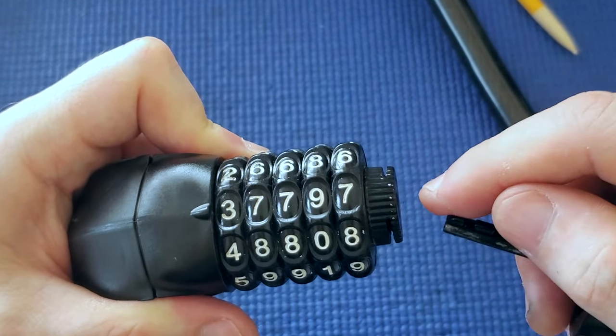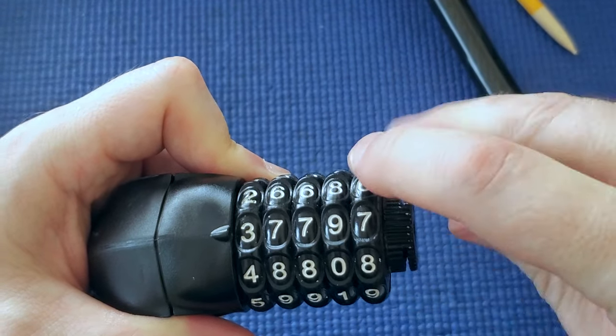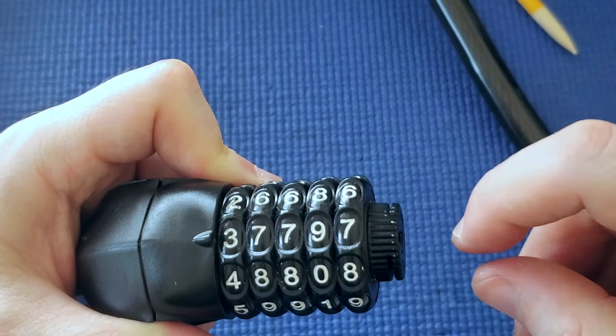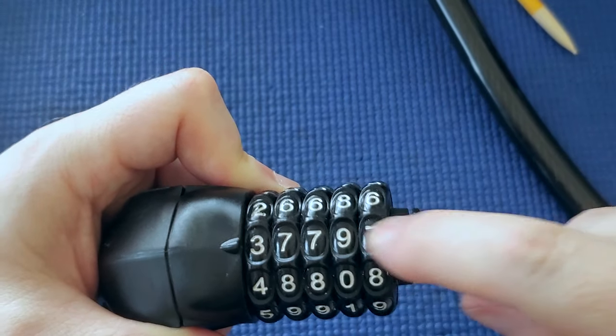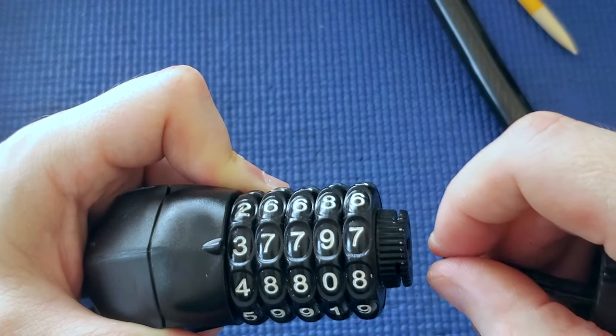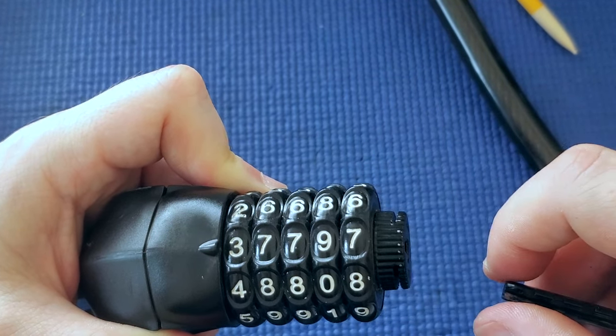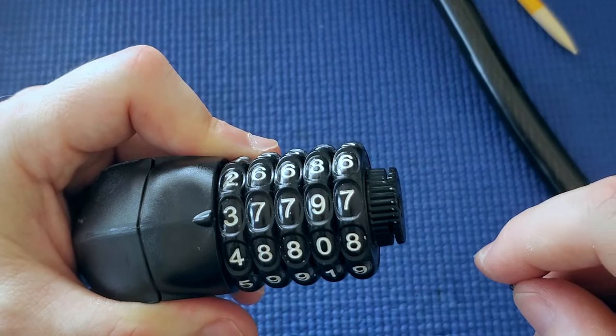This method, this direct method, trying to find these lurches, these gates, these stuck positions, it's harder to do and it only works on some bike locks, and I'm lucky this one didn't have any false gates. The indirect method works on many more bike locks, but this method, when it does work, it can work a lot faster. Thanks.